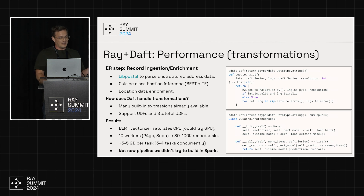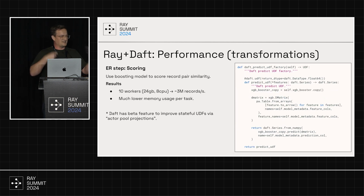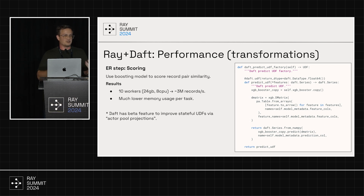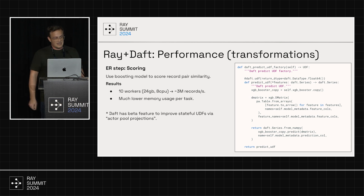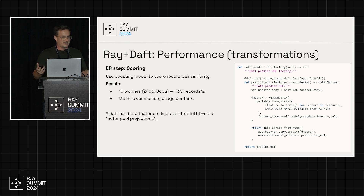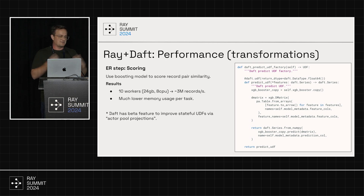For something more realistic in terms of throughput: when we do scoring, we had trained a model also on Ray using Ray Train and Ray Tune to score the weighted edges. With the same setup — 10 workers — we could process 3 million records per second. Much lower memory usage per task because the boosted model is much smaller when loaded into each instance.